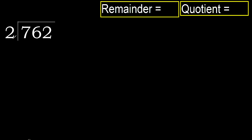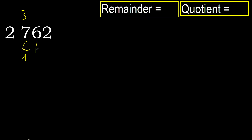762 divided by 2. 7 is not less, so we work with 7. 2 multiplied by which number is nearest to 7 but not greater? 2 multiplied by 4 is 8, which is greater. Multiply by 3: 6 is not greater. Subtract: 7 minus 6 is 1.